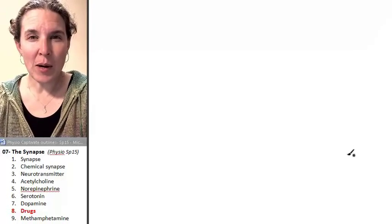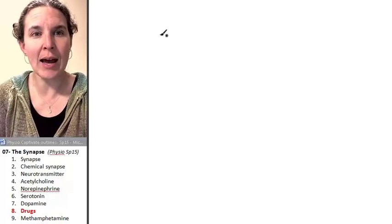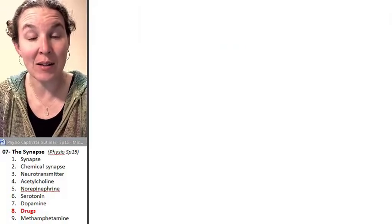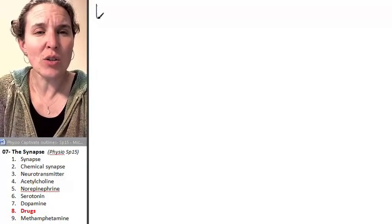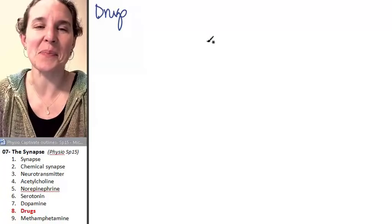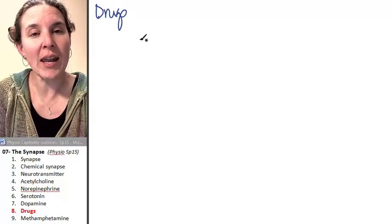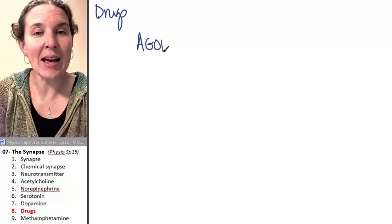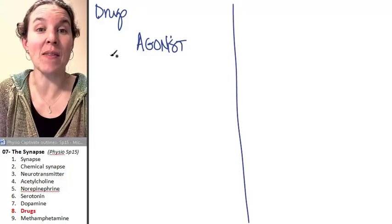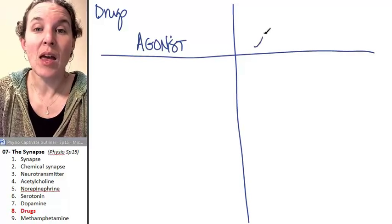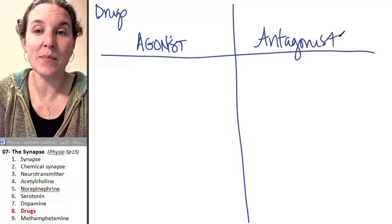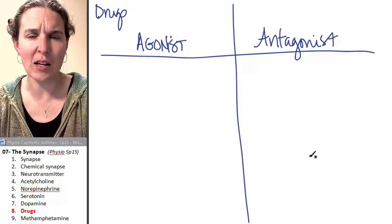We've already talked about how drugs can act as agonists or antagonists for neurotransmitters, and that can be a mechanism for how a drug works. We're going to look at this generally, not at specific drugs, but if a drug acts like an agonist, what are some mechanisms that it can use? And if the drug acts like an antagonist, what are some mechanisms that it could use?